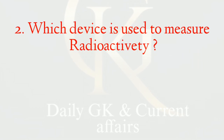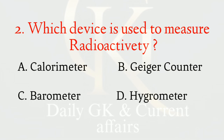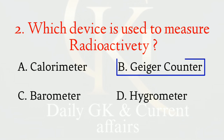Which device is used to measure radioactivity? The correct option is b: Geiger counter.